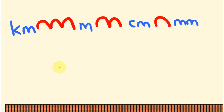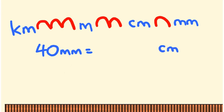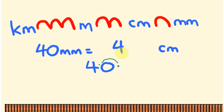For example: how many centimetres is 40 millimetres? We're going from millimetres to centimetres — that's one jump in that direction. The decimal place is at the end of 40, and jumping once moves it one place, giving us 4.0. So 40 millimetres equals 4 centimetres.